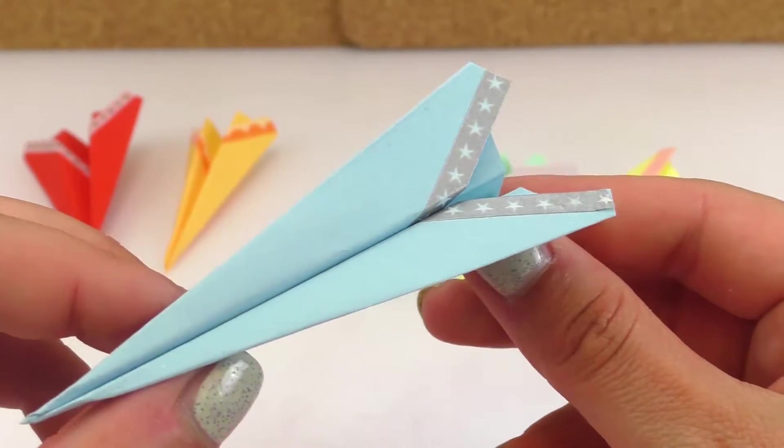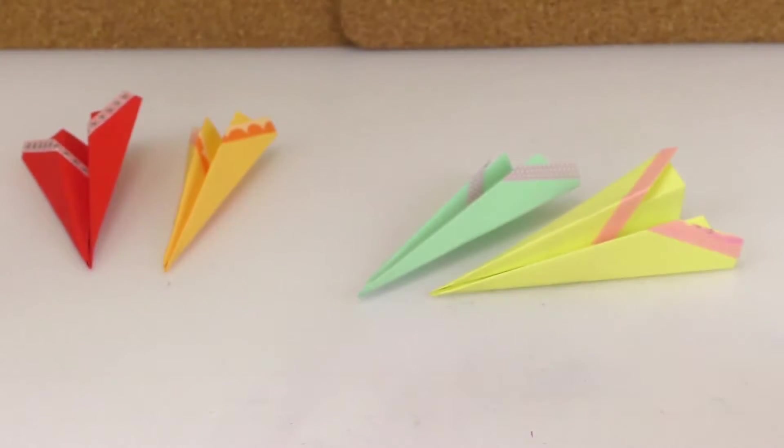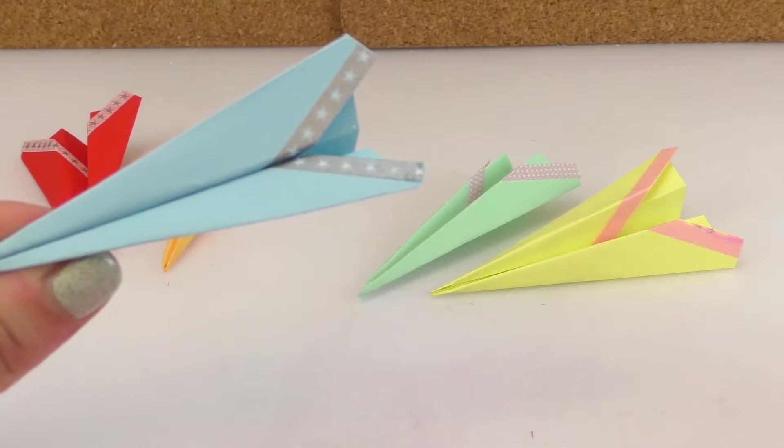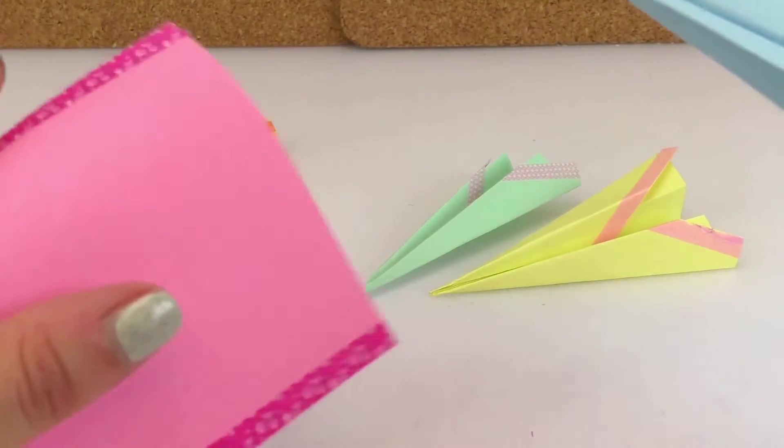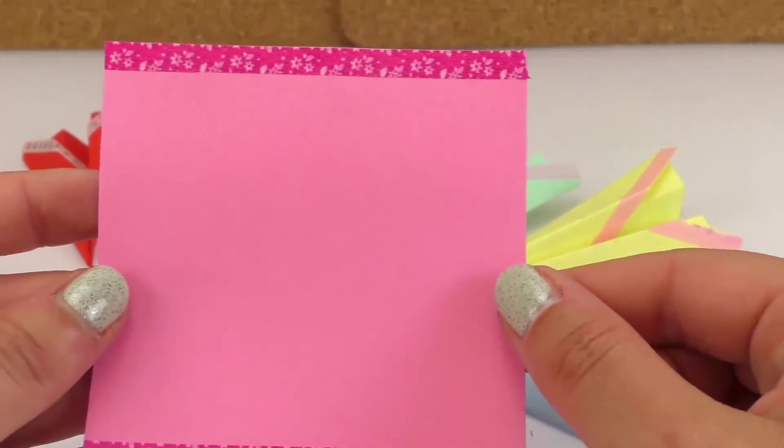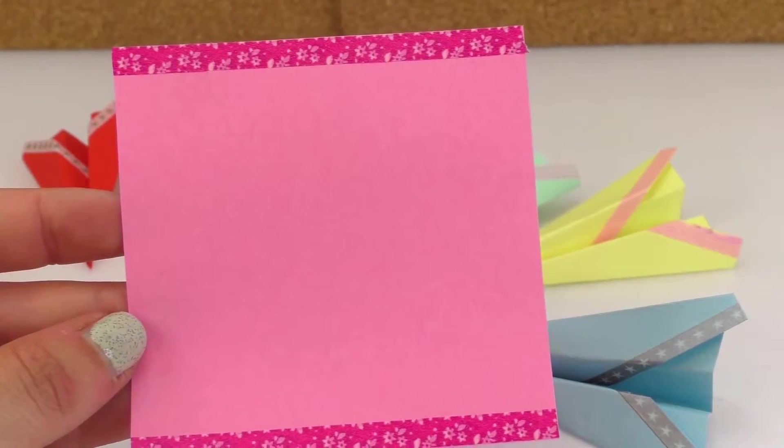I decorated them with washi tape, so they're super awesome. I have here a ton of planes that I did in different colors. This one is blue and the one that I'm going to make is going to be pink. So let's get started.